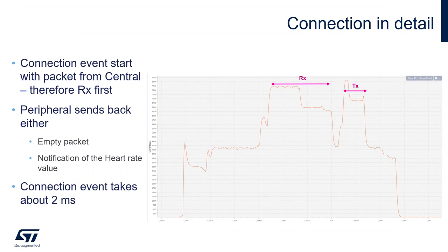Each connection event starts with a packet from the central, so the radio RX goes first. The peripheral responds either with an empty packet or with a notification of the heart rate value. The connection event takes about 2 milliseconds to complete with a zero-length packet response.